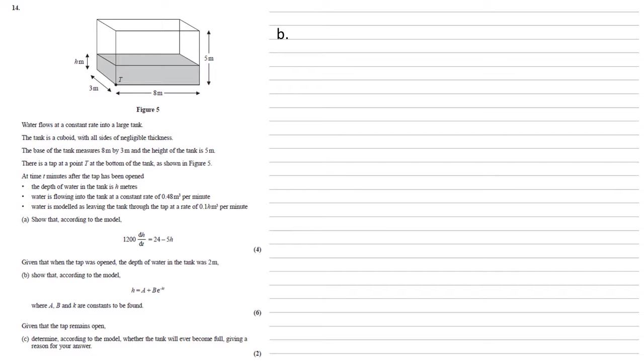Given that when the tap was opened, the depth of water in the tank was 2 metres, for part b, we need to show that, according to the model, h equals a plus b e to the minus kt, where a, b and k are constants to be found.